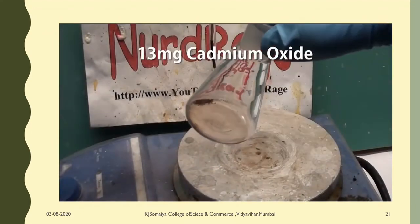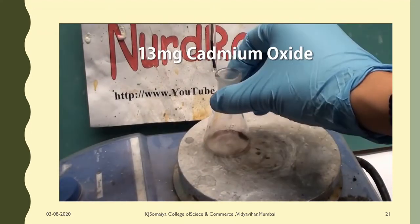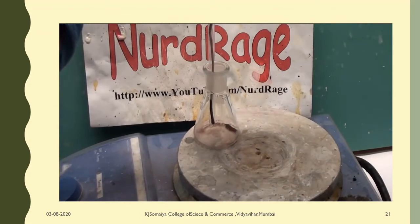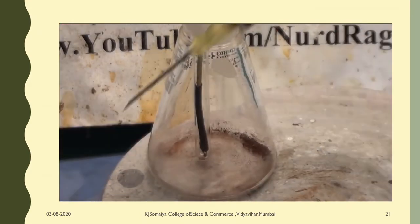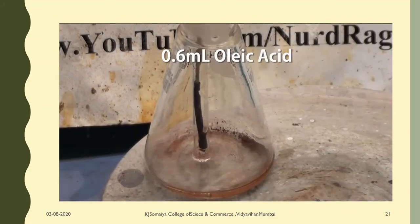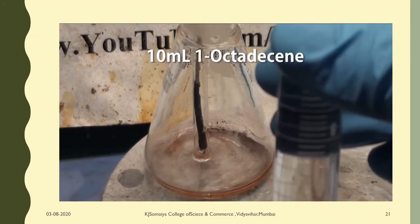Now get 13mg of cadmium oxide in a flask and place in a glass thermometer. Mine happens to be a glass encapsulated digital thermometer. Now add to it 0.6mL of oleic acid and 10mL of 1-octadecene.